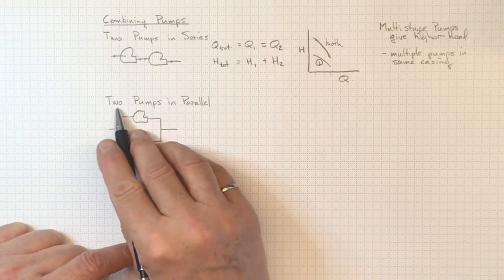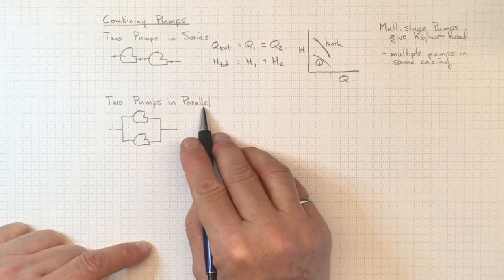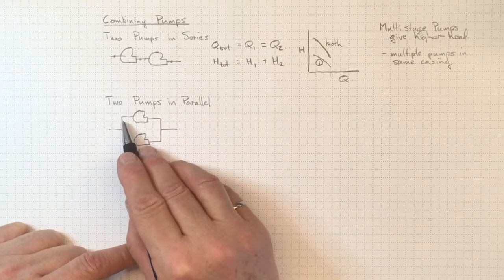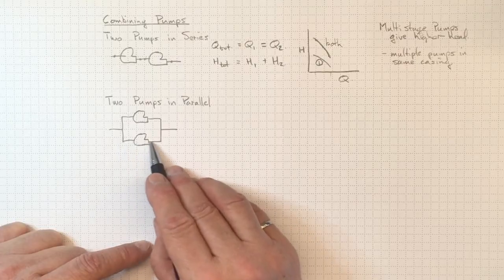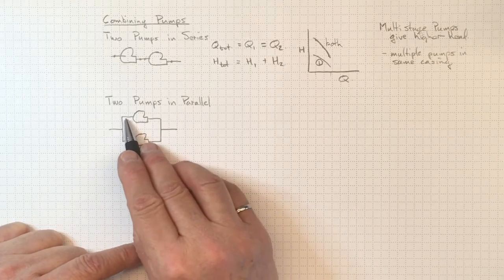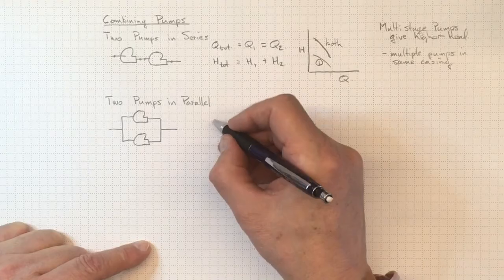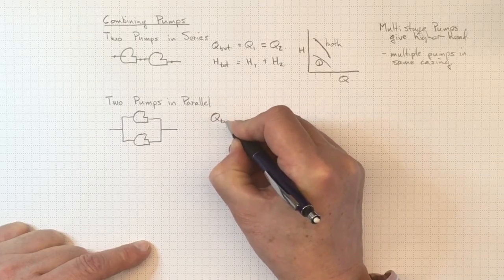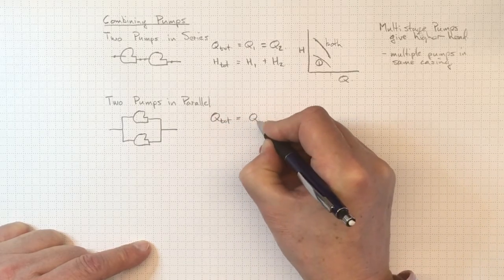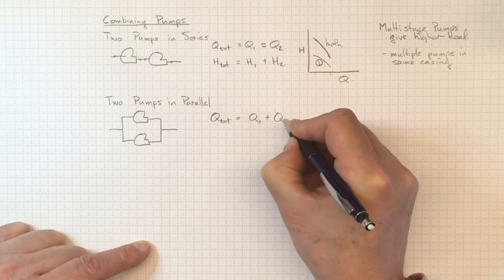Now let's look what happens if we put the pumps in parallel. Well, if I've got flow going through pump one and flow going through pump two, then the combined flow will be the flow going through both of them. So the total flow will be Q1 plus Q2.